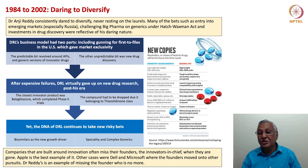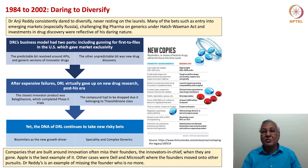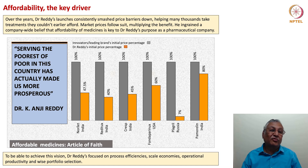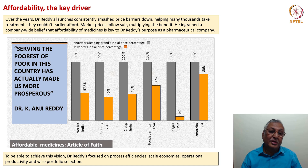Companies built around innovation often miss their founders — the 'innovators in chief.' When they are gone, Apple is the best example. Dr. Reddy's is an example of how the discovery bet could not be continued in the absence of Dr. Anji Reddy as a regular powerful patriarch governing the discovery business. Affordability as the key driver of pharmaceutical markets is the greatest contribution Dr. Anji Reddy made. Over the years, Dr. Reddy's launches consistently smashed price barriers, helping many thousands take treatments they couldn't earlier afford. He ingrained a company-wide belief that affordability of medicines is key to Dr. Reddy's purpose.